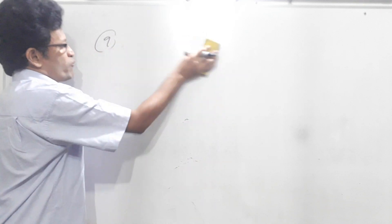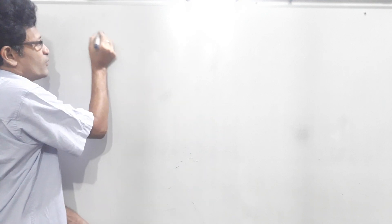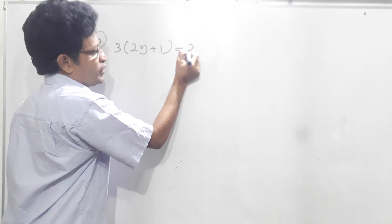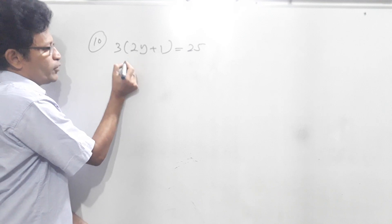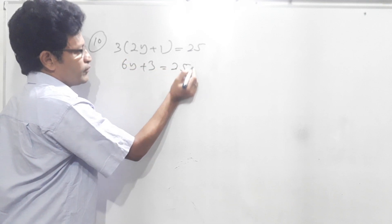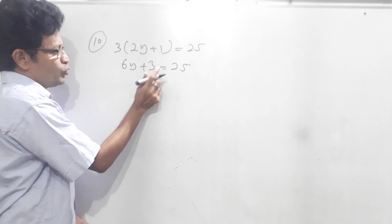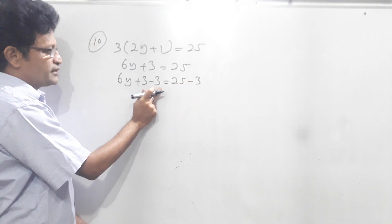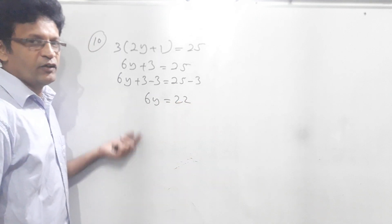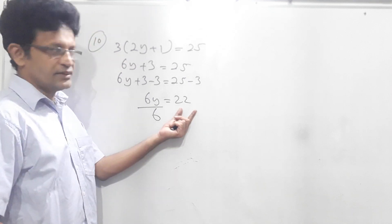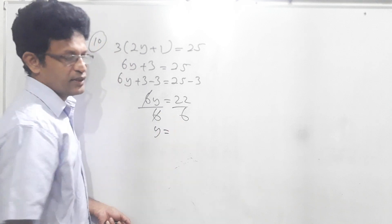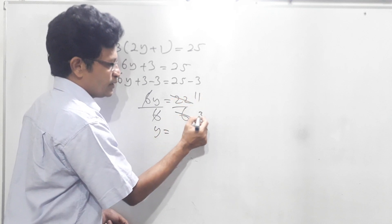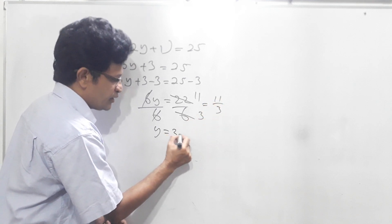Now we will do question number 10. Question number 10 is 3 times (2y plus 1) equals 25. Now expanding: 3 times 2y is 6y, plus 3 equals 25. To get rid of this 3 we subtract 3 from this side; 6y plus 3 minus 3 equals 25 minus 3. Plus 3 and minus 3 cancel, then 6y equals 22. Now we have to get rid of this 6; divide both sides by 6. 6 and 6 cancel; y equals 22 divided by 6. You can simplify by 2: 22 divided by 2 is 11, 6 divided by 2 is 3, so y equals 11 over 3, that means 3 and 2 thirds.